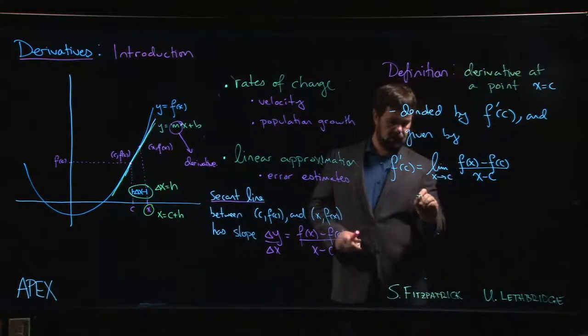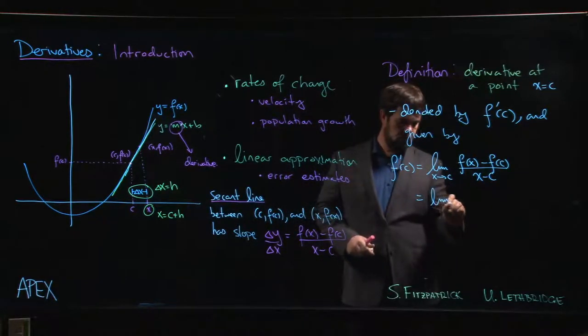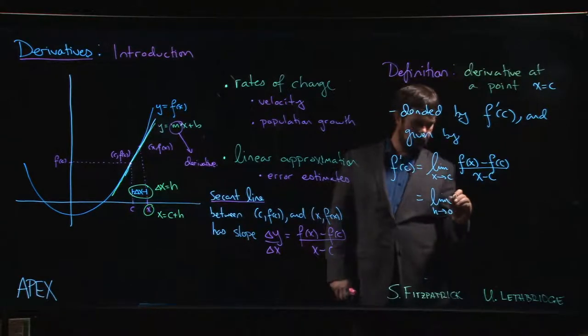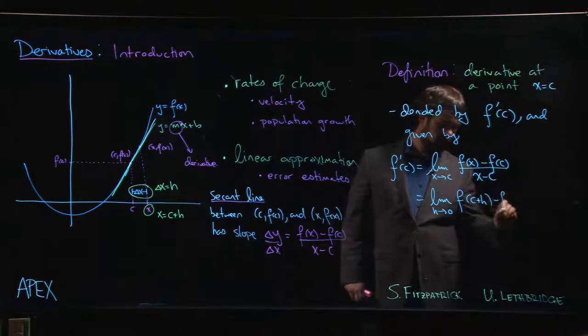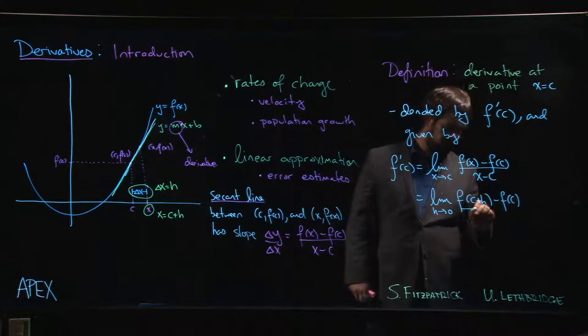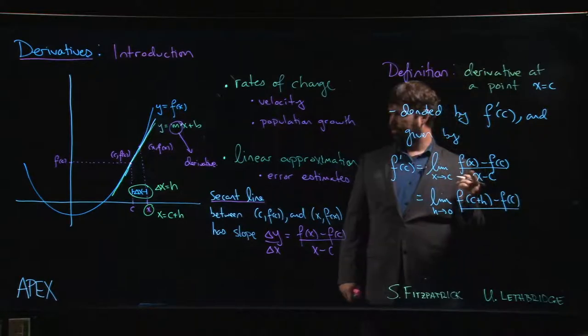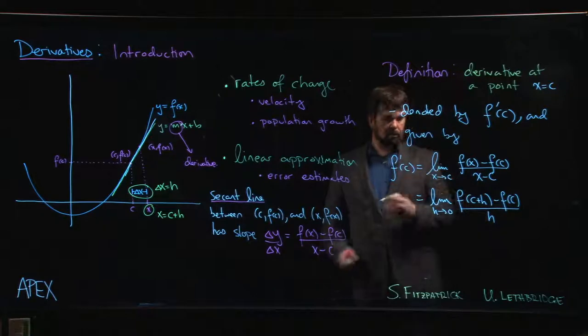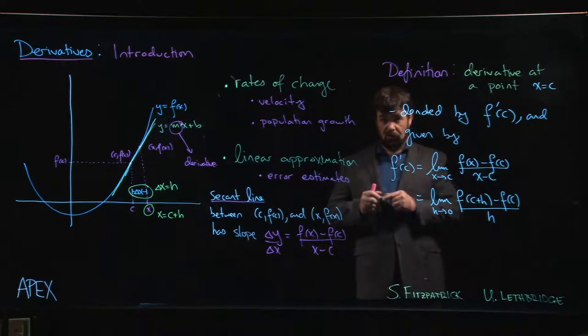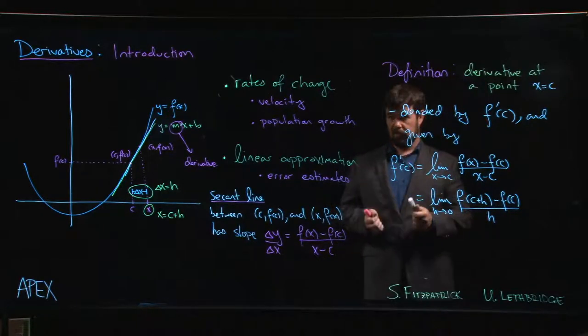f(c + h) minus f(c) over x minus c, well that's just the difference, it's just h. And you probably recognize this as a difference quotient. There's a reason why we looked at difference quotients and computing limits of difference quotients, because that's how you compute derivatives.